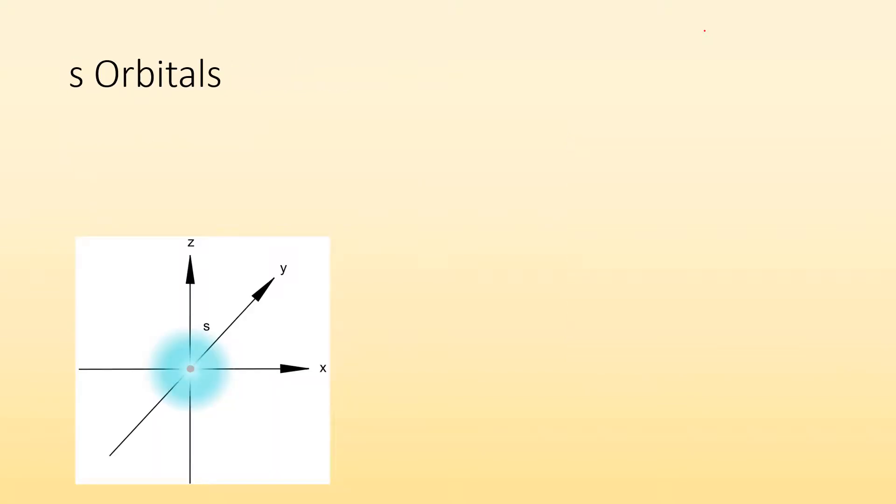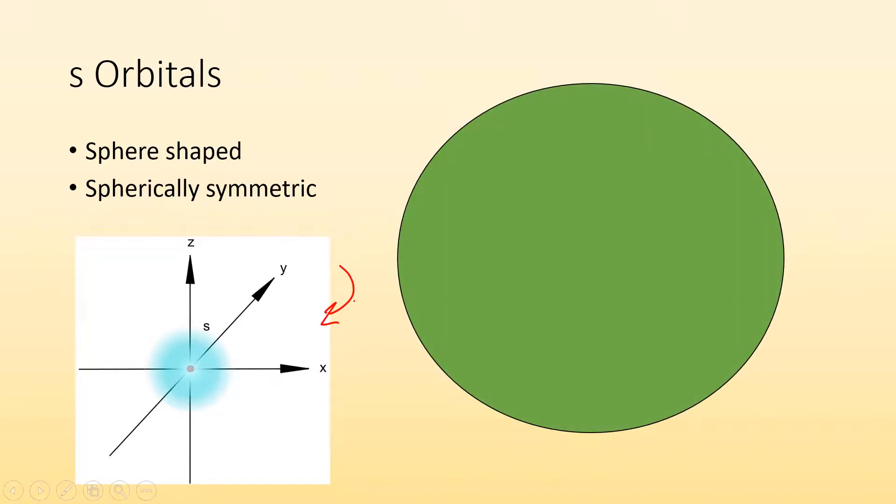So let's start. S orbitals, what it looks like. It looks like a sphere. It's a sphere shape. It's spherically symmetrical. So you can see the electron density representation right here. Contour representation would just look like a big old sphere. S for sphere, you can think of that.